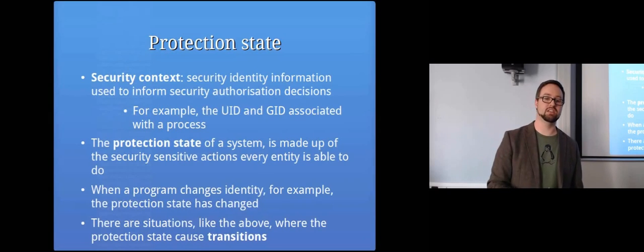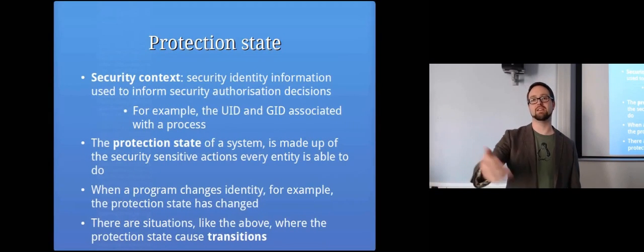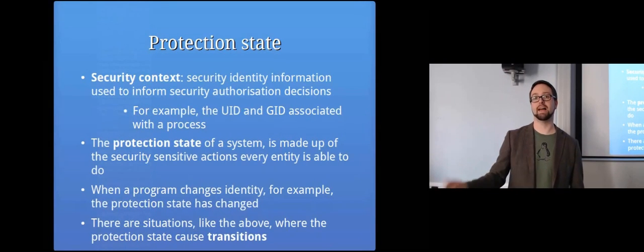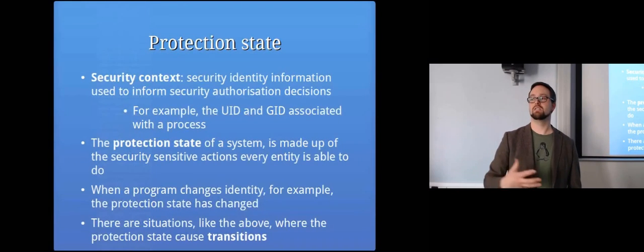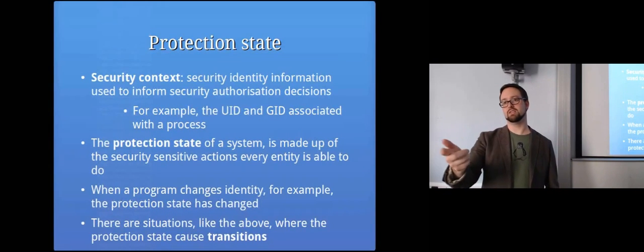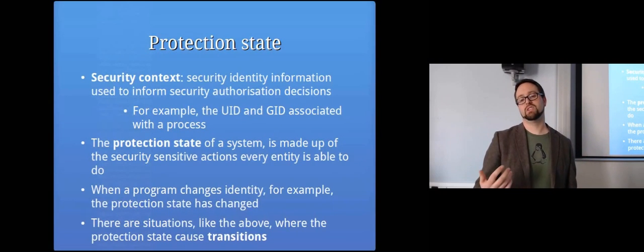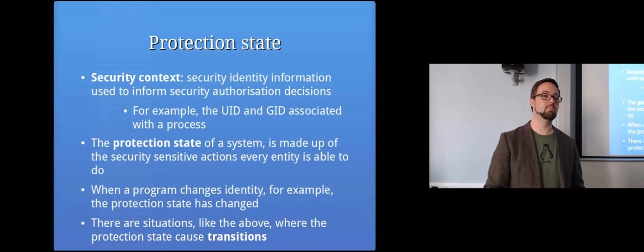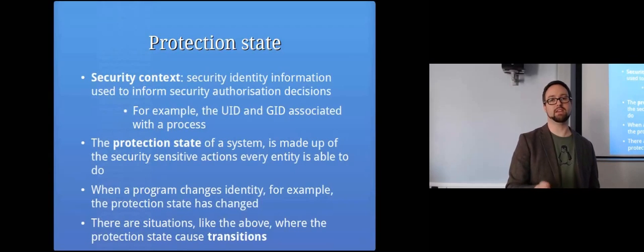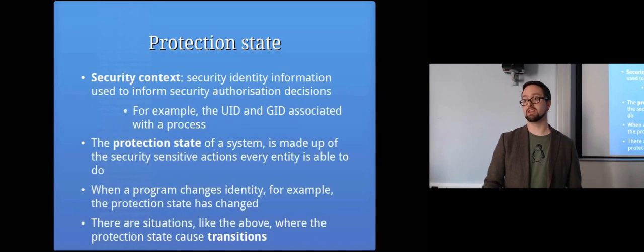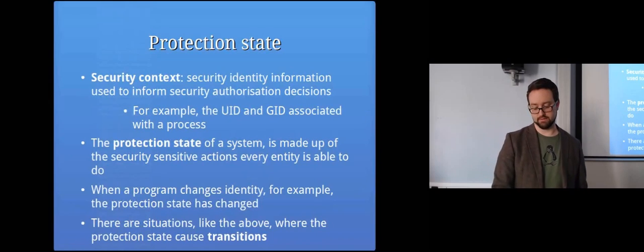When your security context changes and you're acting with a different set of permissions, it's really important on a computer system to clearly define what kinds of security context changes are allowed and how those transitions work. That needs to be tightly controlled — you need someone else to authorize swapping your name badge; you shouldn't be able to randomly change it yourself. On a UNIX system, changing your UID to do something not normally allowed must be very tightly controlled.